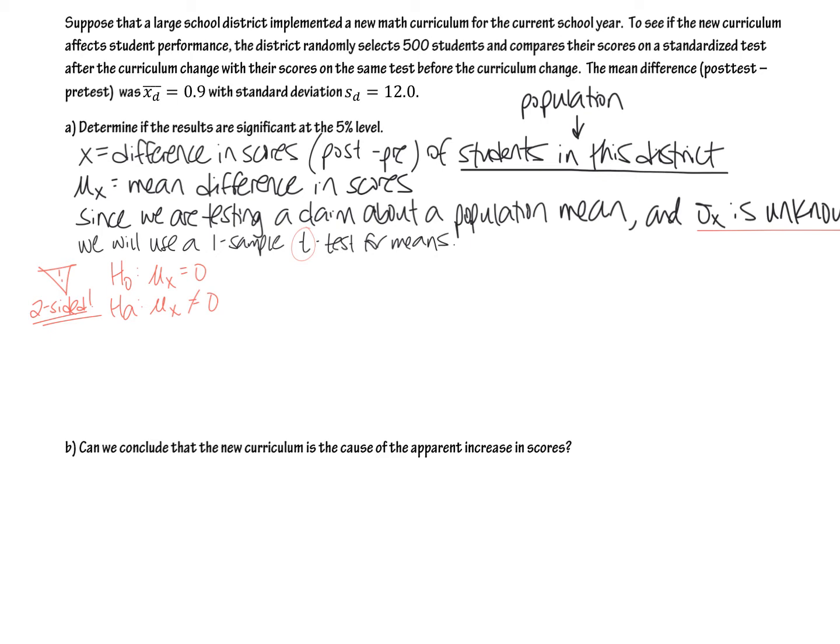And then for normality, what are we supposed to do here? Does it say the population distribution of mean difference of scores is normal? No. So next scenario is, can we use the CLT? Yes, our sample size is big enough. So I'm going to pause and write that all out.